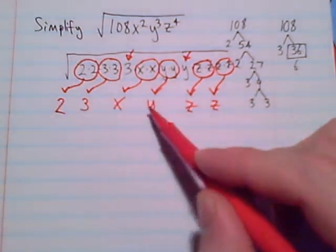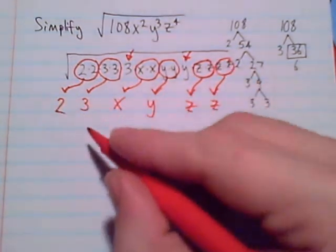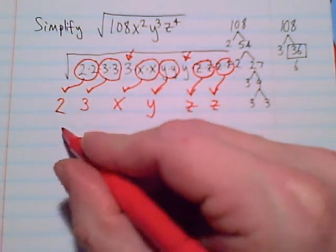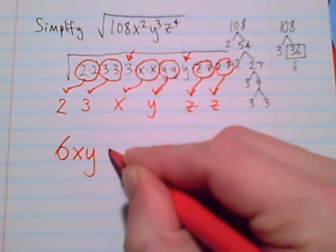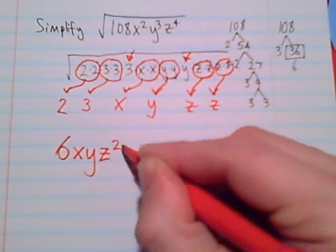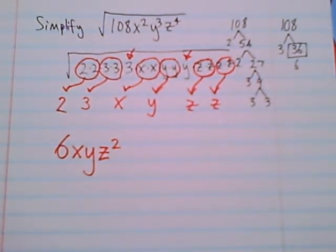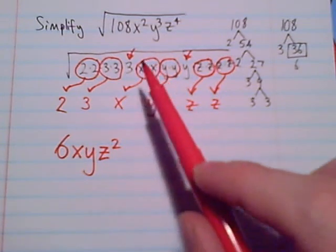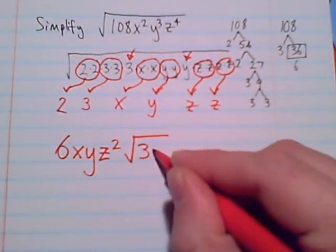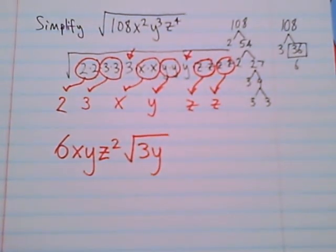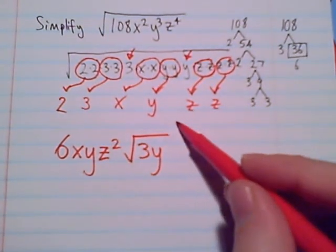To finish writing our answer, all of these factors that we brought out of the radical need to be multiplied together. We have 6 with x, y, z squared. And leftover inside the radical, 3 and y. So there's our radical, 3y. There's our simplified answer.